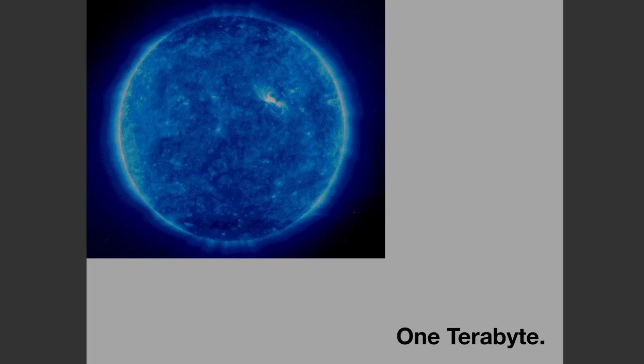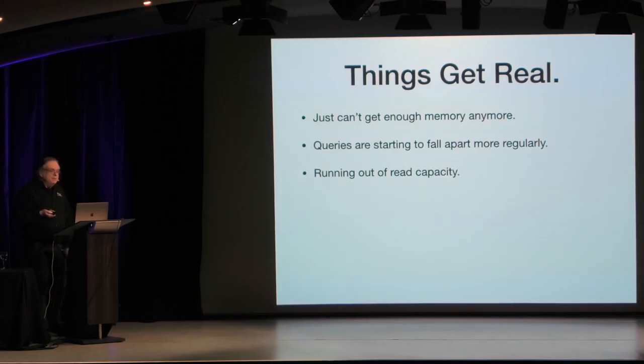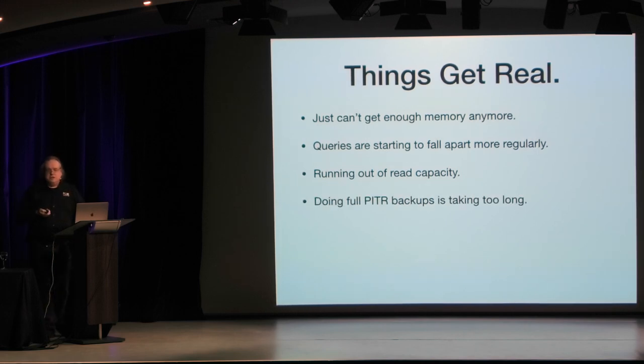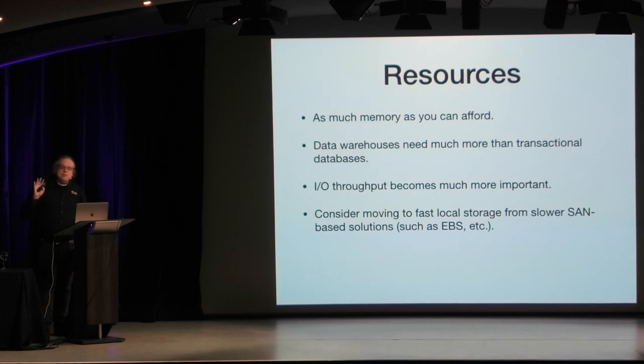Life continues, and now you have a one-terabyte database. Things kind of get real here. You just can't get enough memory anymore - one-terabyte RAM machines are not a common solution to these problems. The queries are starting to fall apart more regularly. This is the point that you should start running out of read capacity on the primary, and doing a full PITR backup just takes a while because you're throwing around one terabyte worth of data. Get as much memory as you can afford. If you're building a data warehouse, it's going to need more memory than a transactional database. And IO throughput becomes much more important - consider moving to fast local storage from SAN-based solutions such as EBS around this size. Local NVMe disks will be much faster.